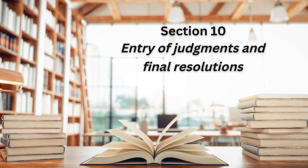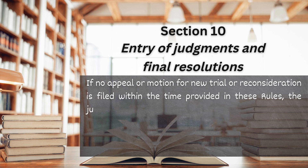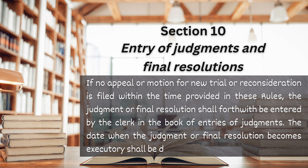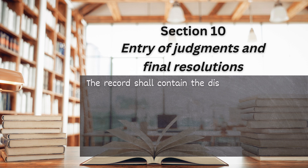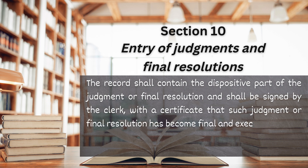Section 10. Entry of judgments and final resolutions. If no appeal or motion for new trial or reconsideration is filed within the time provided in these rules, the judgment or final resolution shall forthwith be entered by the clerk in the book of entries of judgments. The date when the judgment or final resolution becomes executory shall be deemed as the date of its entry. The record shall contain the dispositive part of the judgment or final resolution and shall be signed by the clerk with a certificate that such judgment or final resolution has become final and executory.